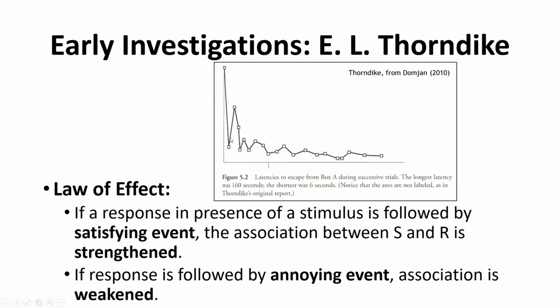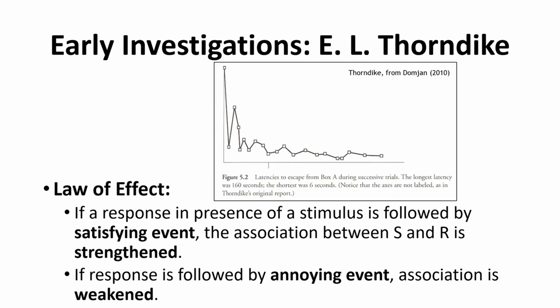Thorndike determined they weren't using insight — they weren't having aha moments where they'd go from being unable to solve the problem to suddenly solving it all the time. Instead, we see a gradual decrease showing baby steps in their learning. They learn a little each time, successively getting better, and their new knowledge was gained through a process that lines up with S-R associations. Basically, they made an associative link between a stimulus and a response, which determined whether they did that response more or less frequently.